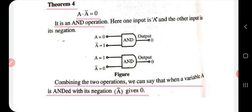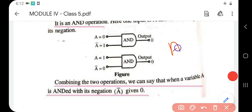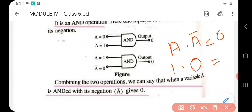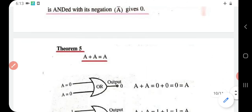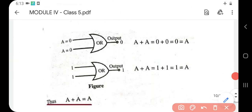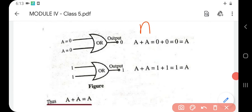Theorem four: a dot a-bar equals zero. We use an AND gate. When a is one: one dot one-bar equals one dot zero, which is zero. When a is zero: zero dot zero-bar equals zero dot one, which is again zero. Both cases prove that a dot a-bar equals zero.